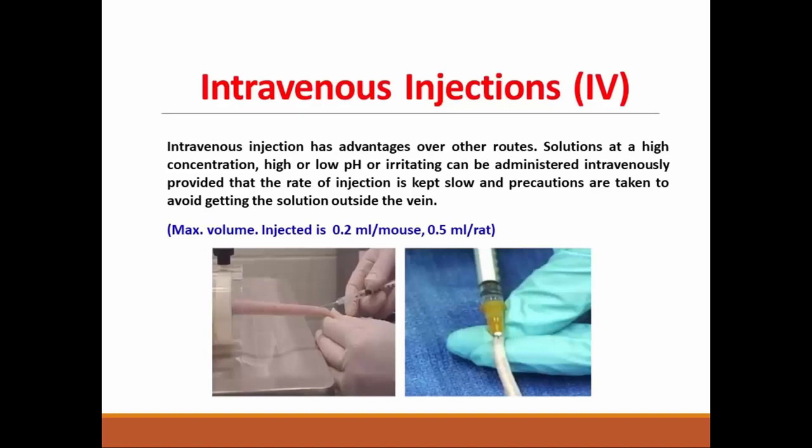Intravenous injections. This route has advantages over other routes because we can inject solutions at high concentration, high or low pH, or even irritating substances, provided that the rate of injection is slow and precautions are taken to avoid getting the solution outside the vein. However, we have limited volume here — the maximum volume is 0.1 ml per mouse or 0.5 ml per rat.